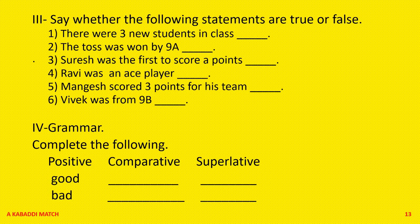Grammar — complete the following degrees of comparison. Positive, comparative, superlative. For example: 'Good' — what is the comparative of good? Better. And the superlative? Best. Then 'bad' — comparative: worse, superlative: worst.